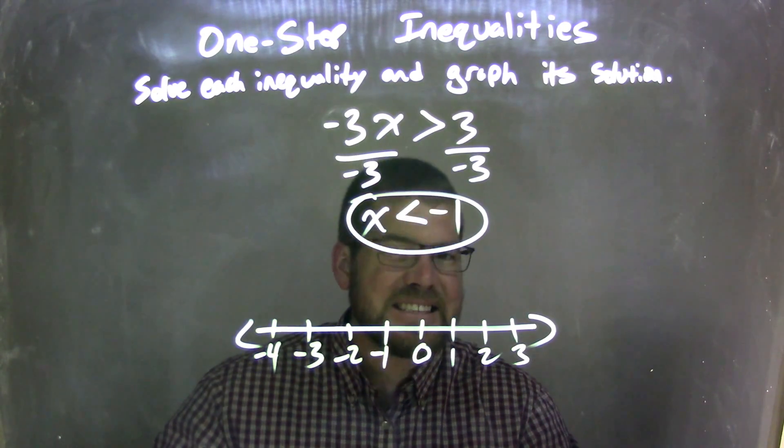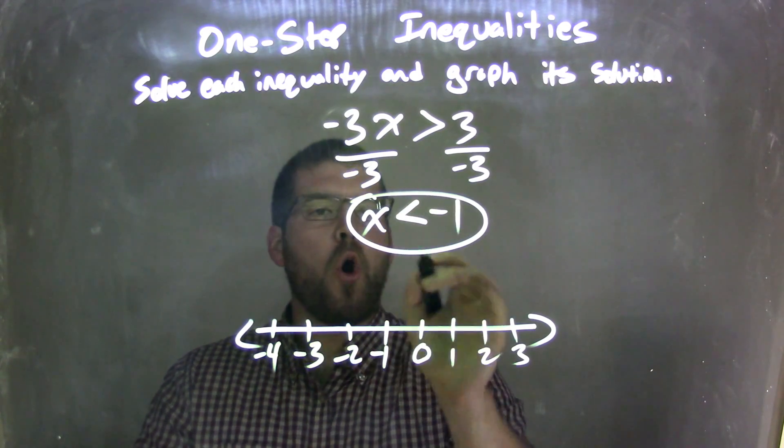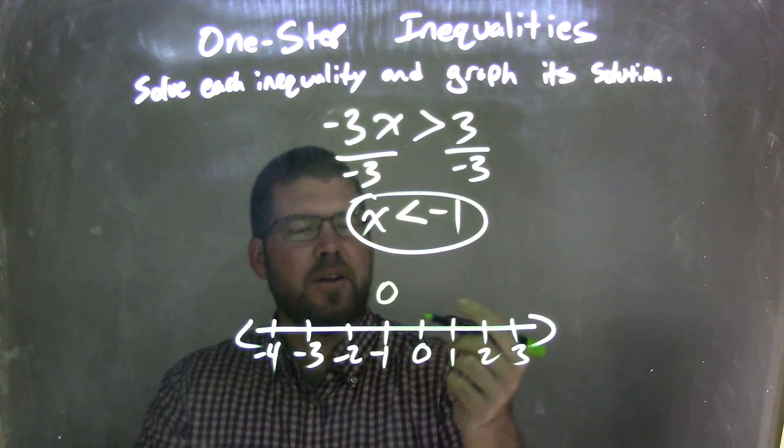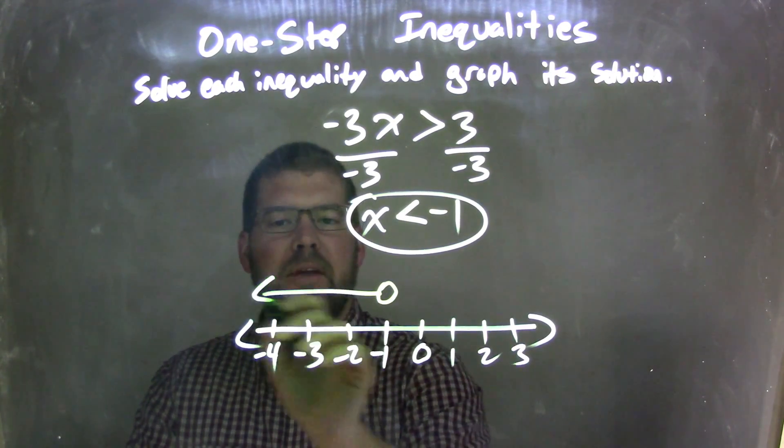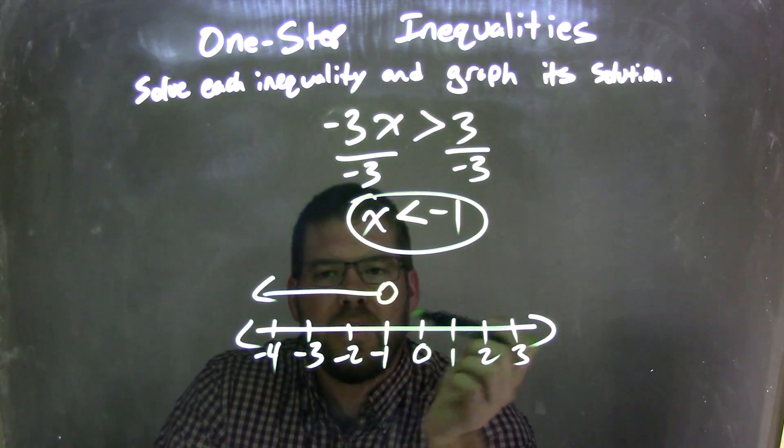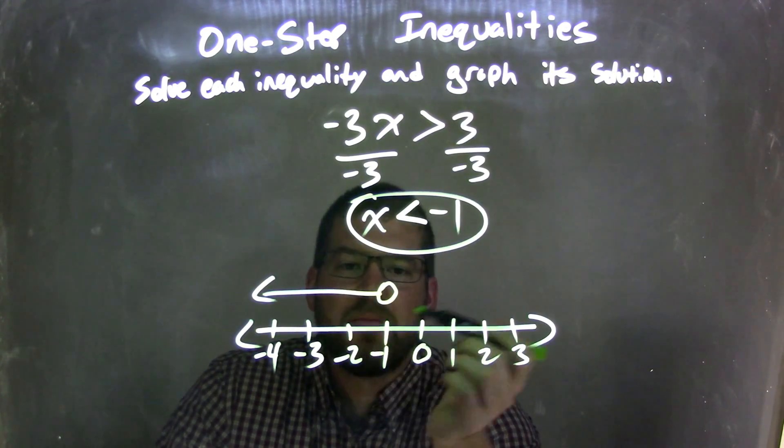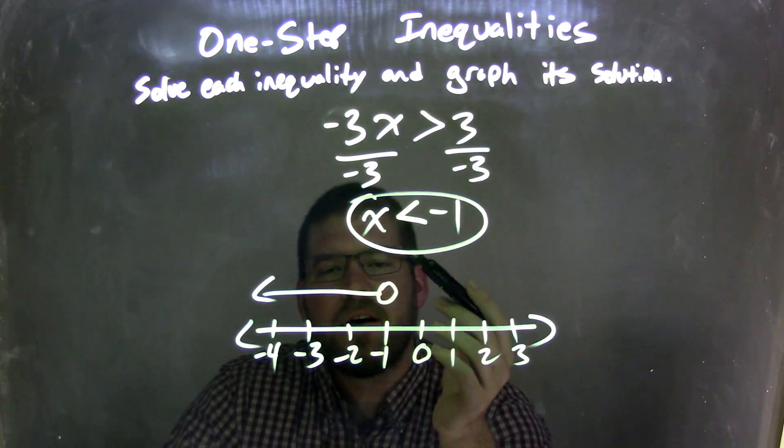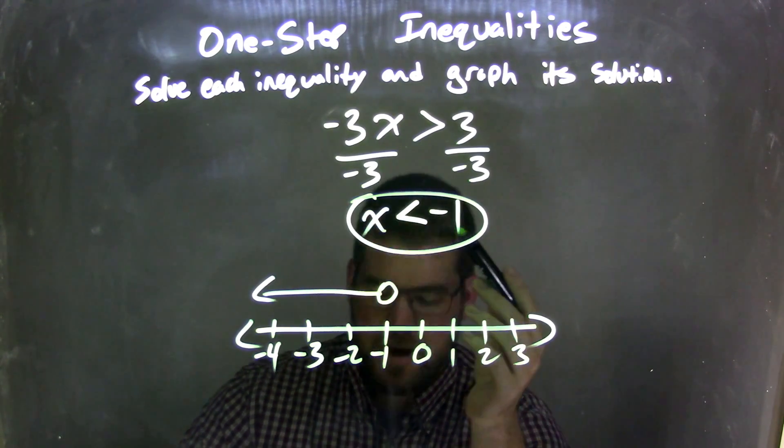So if x is less than negative 1, we have the open circle at our negative 1, and since it's less than, we put the arrow to the left right there. So we have x is less than negative 1, open circle at negative 1, arrow goes to the left, and there we have it. That matches up with our answer of x is less than negative 1.